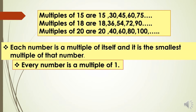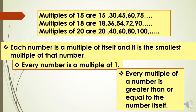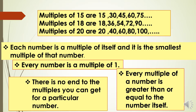The second property is: every number is a multiple of 1. The third property is: every multiple of a number is greater than or equal to the number itself — in multiples of 18, no number is smaller than 18. The fourth property is: there is no end to the multiples of a particular number, so we cannot say which is the largest multiple.